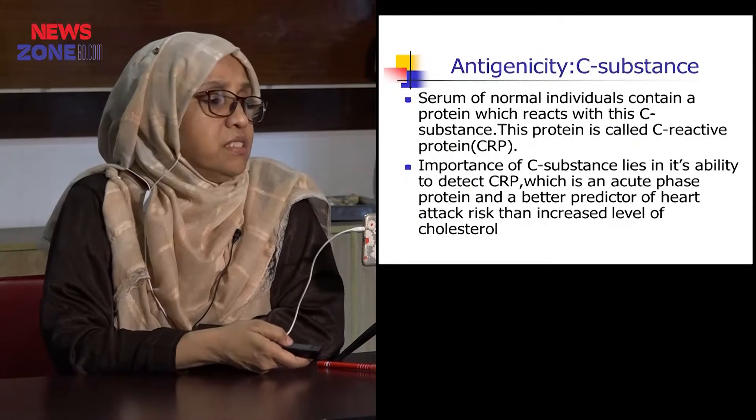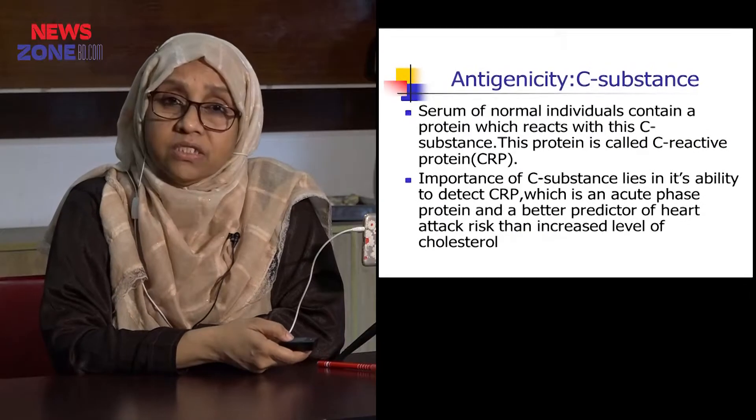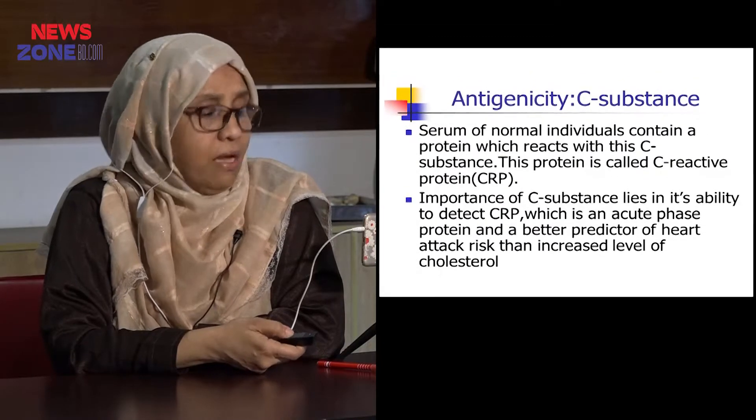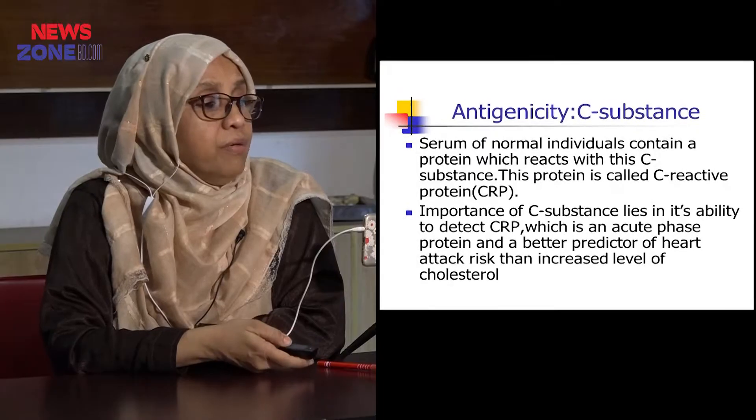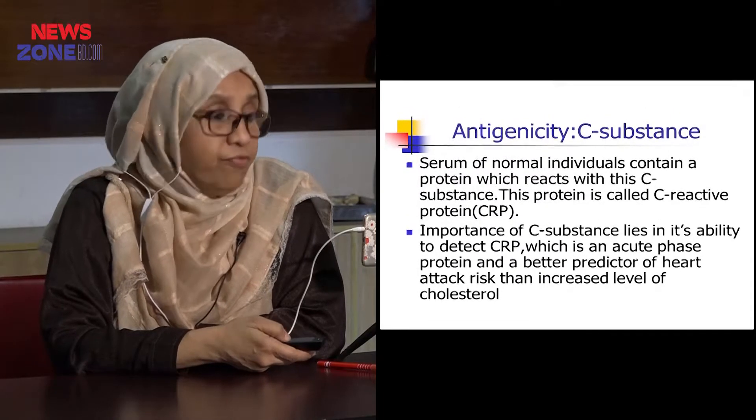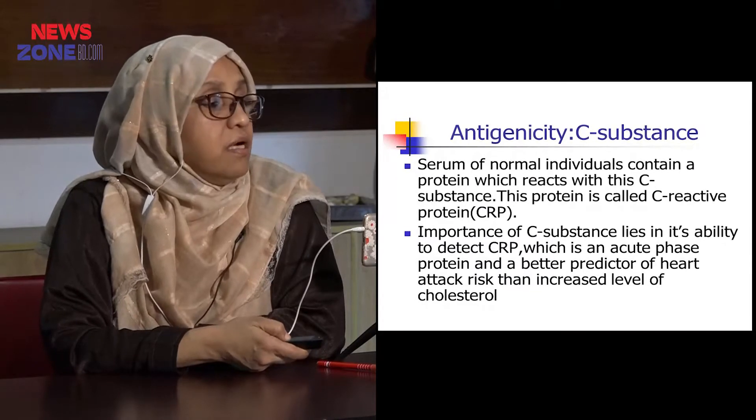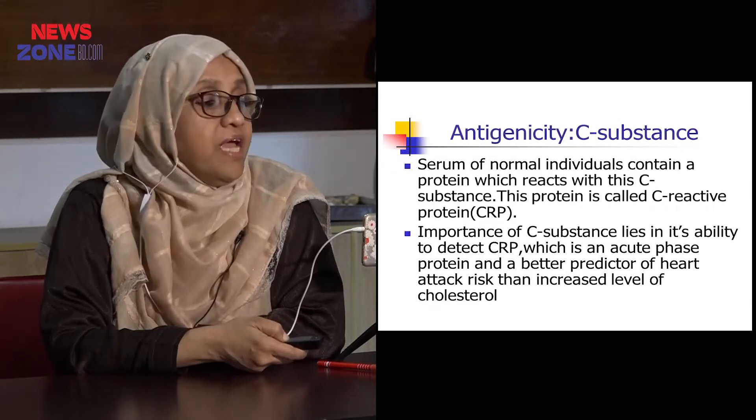Regarding antigenicity, the C substance of the polysaccharide: the serum of a normal individual contains a protein which reacts with this C substance, and that protein is called C-reactive protein. The importance of the C substance lies in its ability to detect CRP, which is an acute phase protein and is being used as a better predictor of heart attack risk than elevated cholesterol levels.